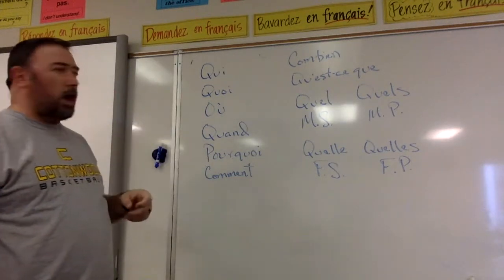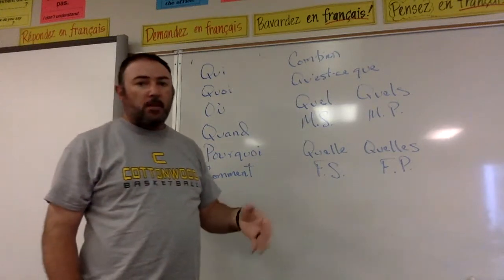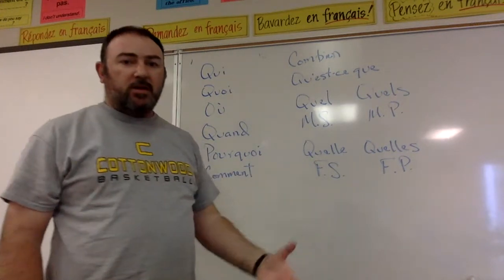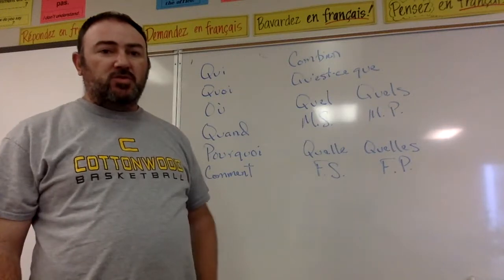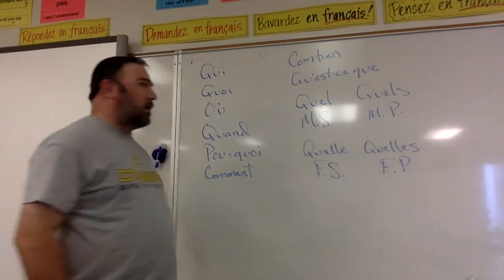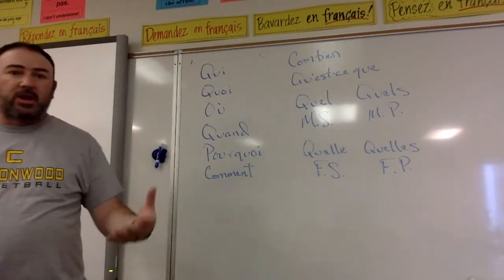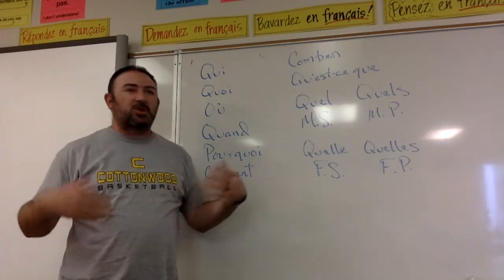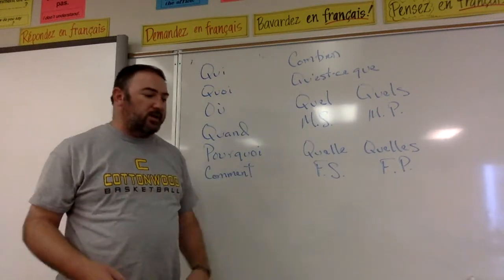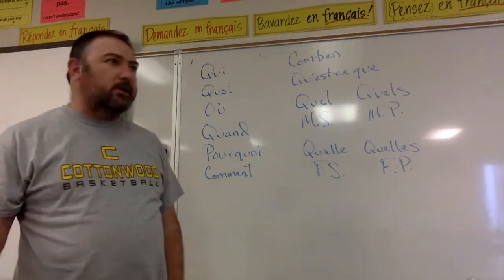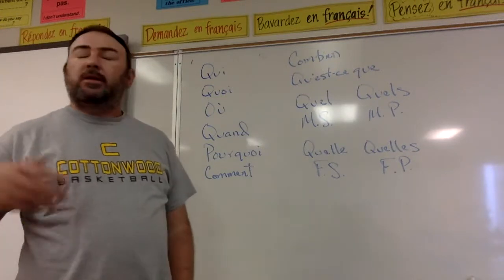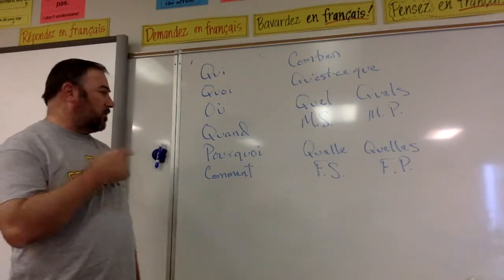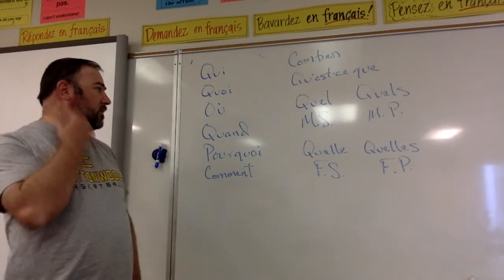The next one is 'quoi.' 'Quoi' means what. Now, you're not going to use 'quoi' when you don't hear somebody, when you don't understand what they say, when you need them to repeat. In English that's impolite, and it's impolite in French as well. So you want to use a different word, and we'll get to that one in a minute.